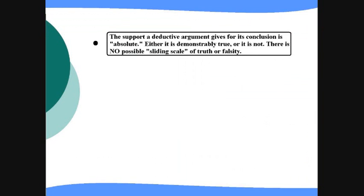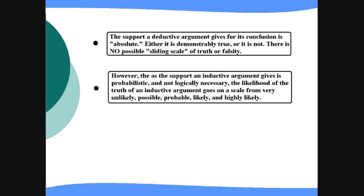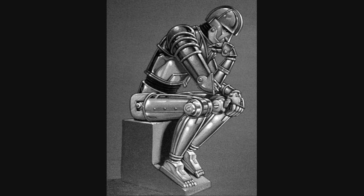As you are probably aware, the support a deductive argument gives for its conclusion is absolute. Either a deductive argument is demonstrably true or it is not true — there is no possible sliding scale of truth or falsity. However, the support an inductive argument gives is probabilistic and not logically necessary, so the likelihood of truth for an inductive argument goes on a scale from very unlikely, possible, probable, likely, and highly likely. If one wanted to be technical, you could give numerical percentages for this. That sums up the introduction to inductive and deductive arguments. I hope this makes some of the basic fundamentals of logic and argumentation clear to you, and if you want a brief review, I'll put some helpful review notes in the video description.